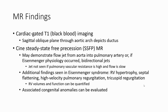In MRI, we can use T1 imaging in sagittal oblique plane through the aortic arch to identify PDA. Steady-state free precession (SSFP) may demonstrate flow signal from the aorta into the pulmonary artery, or if Eisenmenger physiology occurs, bidirectional flow. Additional findings in Eisenmenger syndrome include right ventricular hypertrophy, septal flattening, high-velocity pulmonary regurgitation, and tricuspid regurgitation. Associated congenital anomalies can also be evaluated.